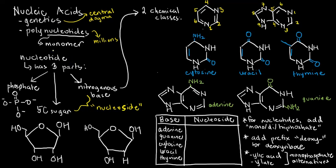It's to say that the building block has three building blocks of its own. Those are the phosphate, the 5-carbon sugar, and the nitrogenous base. Phosphate is phosphate as we know it: PO4 3-.